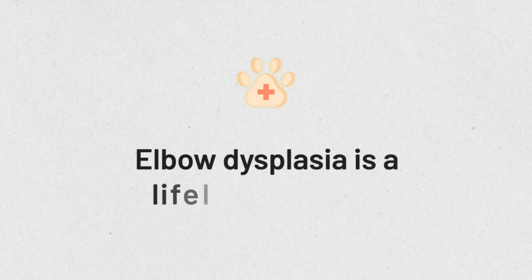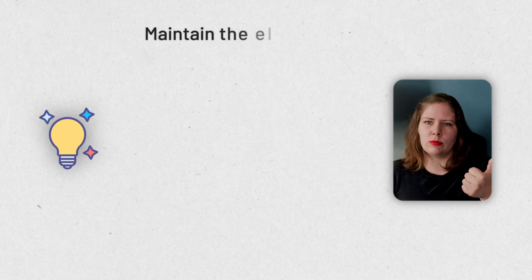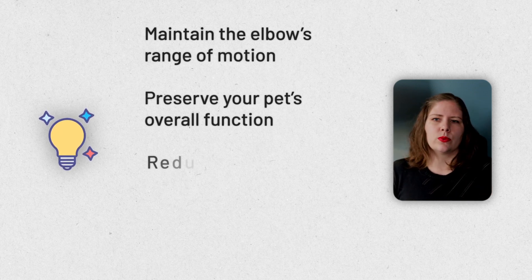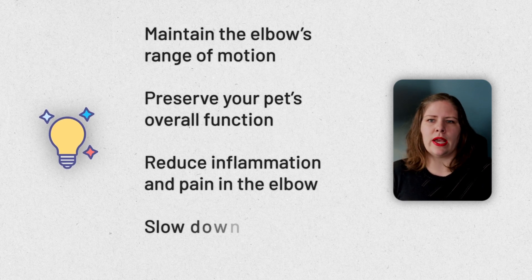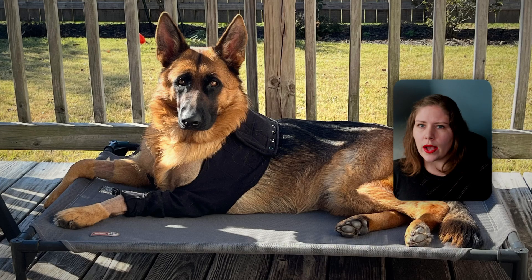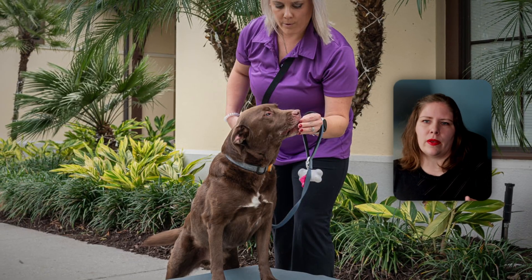It's important to remember that elbow dysplasia is a lifelong condition — we cannot completely cure it. The goal is to maintain the elbow's range of motion and mobility, maintain your pet's function, reduce inflammation and pain in the elbow, and slow down the progression of arthritis in the joint. Depending on exactly what issue or issues your dog had, the specific surgical procedures will vary, and after surgery you should expect to keep your animal quiet for at least a couple of weeks. As soon as their surgeon has cleared them, you will start to see a rehab specialist to help your pet on their recovery journey.